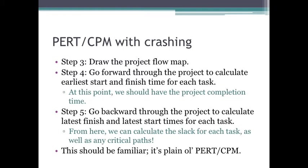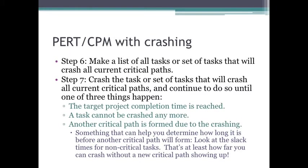I think in this case you're going to want to use the electronic tools available, because this isn't the last time you're going to perform these PERT/CPM steps when crashing. After that, step six: make a list of all the tasks or combination of tasks that will crash all current critical paths. You have to crash all of them.